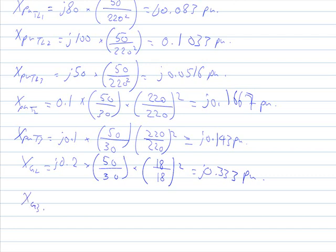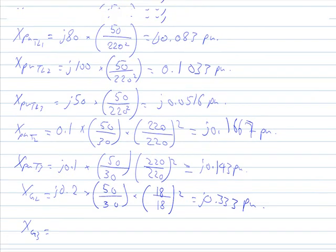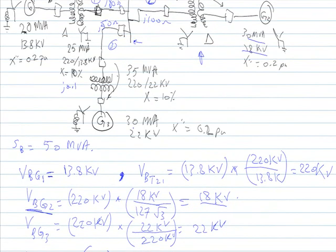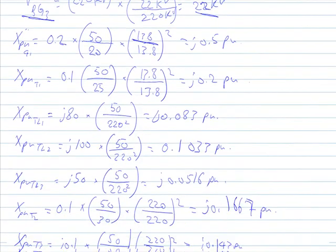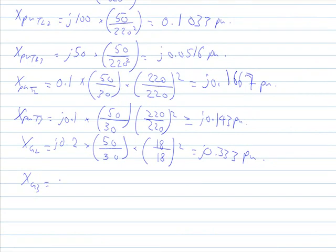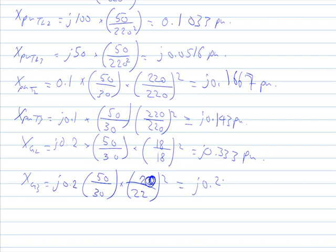For generator number three, the voltage base differs. It has a 30 MVA base and a 22 kV old base, with old per-unit reactance of 0.2. However, there is a correction: the old voltage is 20 kV and the new base is 22 kV. Calculating: 0.2 multiplied by 50 over 30, times 20 over 22 squared, gives 0.275 per unit.